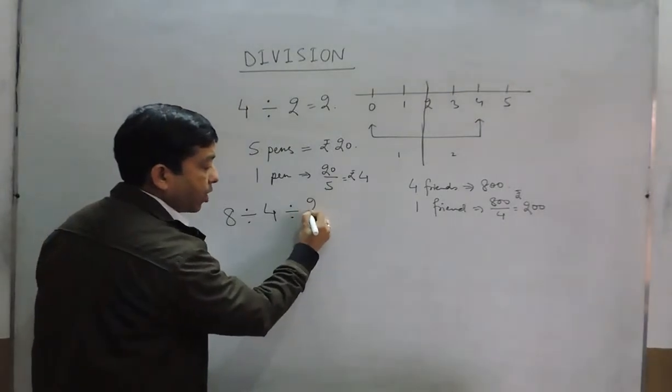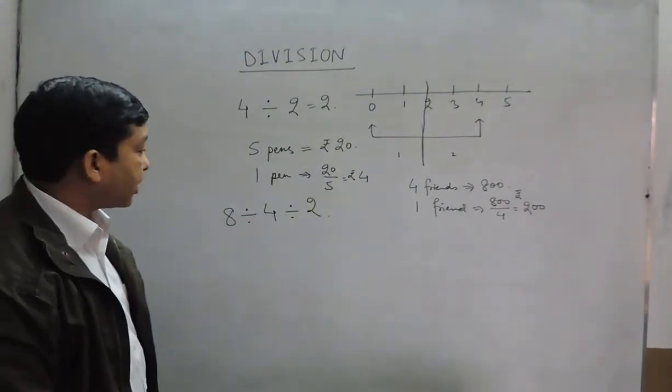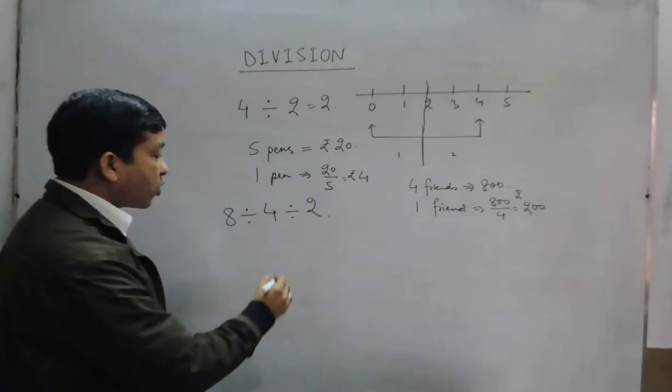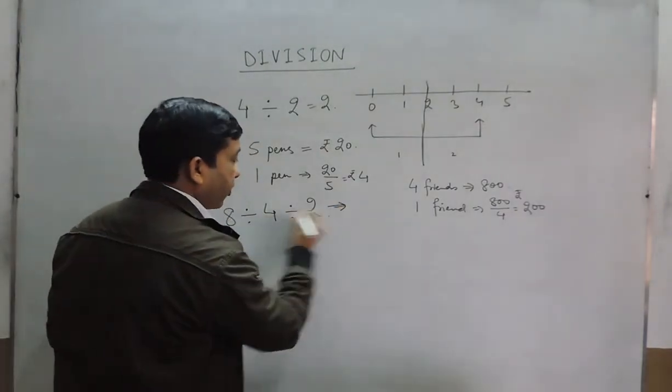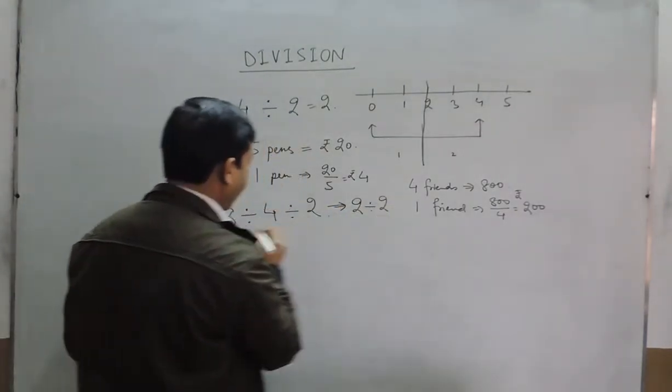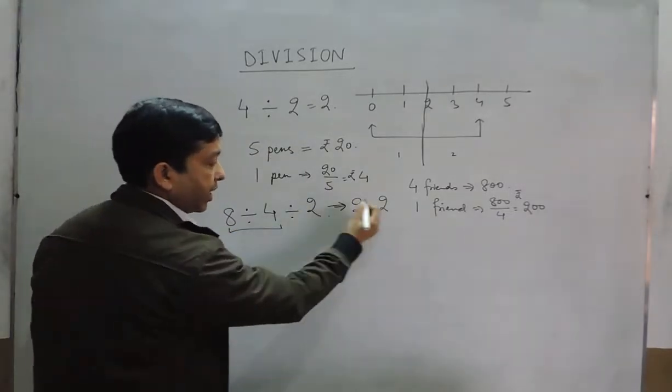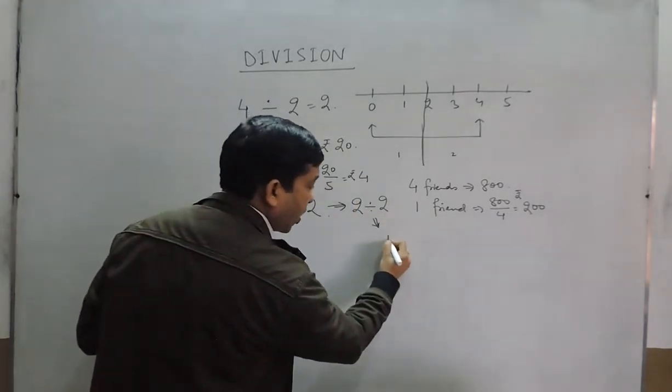Now when we talk about division, if I say there is a simple question: 8 divided by 4 and then divided by 2, what is the correct answer? Many students solve it by saying 8 divided by 4 first, and then divided by 2, where it comes out to be 1.